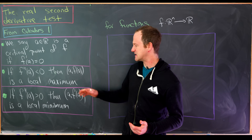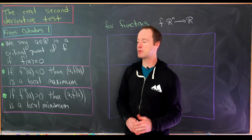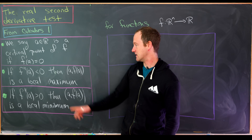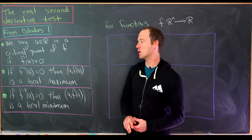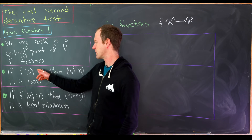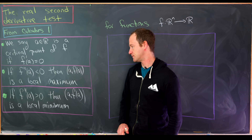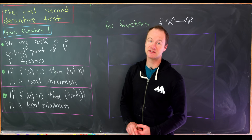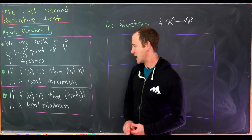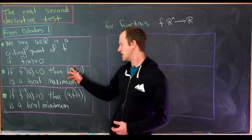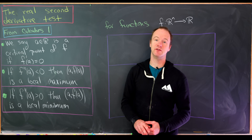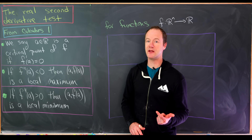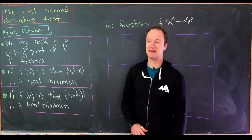Here is essentially what the second derivative test says, with a couple of details left out. If f double prime of a is negative, then the point (a, f(a)) is a local maximum. If the second derivative of f evaluated at a is positive, then (a, f(a)) is a local minimum. This leaves out the case when the second derivative is zero — in that case you could have a local maximum, a local minimum, or neither, something known as a saddle point.